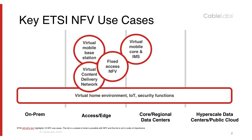The next use case is IoT. IoT can include things like autonomous cars, wearables, smart homes, smart factories, smart buildings, and smart cities. And security functions — we already covered several in the virtual home environment, but from an enterprise point of view there can be more: different types of firewall, intrusion prevention, intrusion detection, and more.